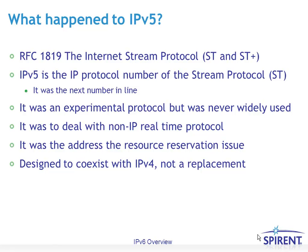You might ask what happened to IPv5. There is an RFC that defined IPv5 — RFC 1819, the Internet Streaming Protocol. It actually isn't an IP protocol, but they were thinking about using it in conjunction with IP, so they took the number 5, which was the next protocol in line after IPv4. But it was never really used.